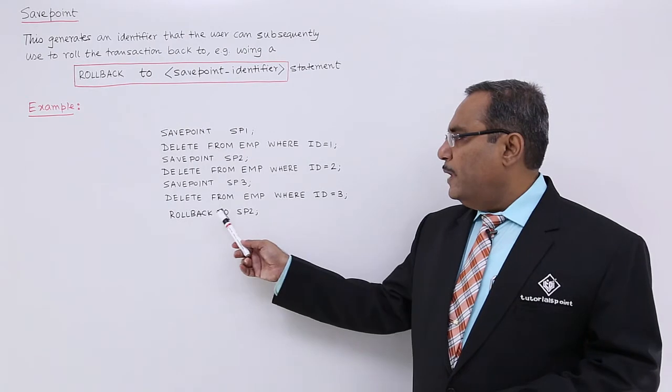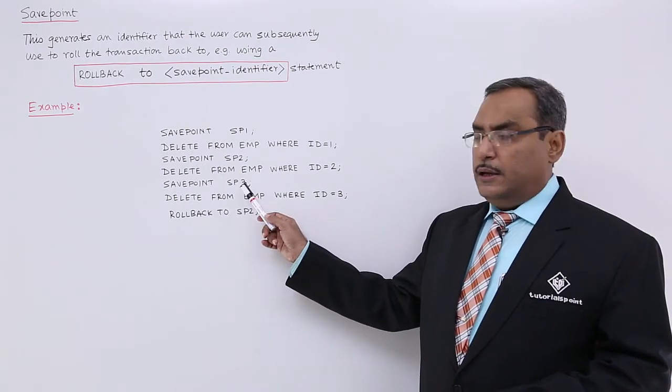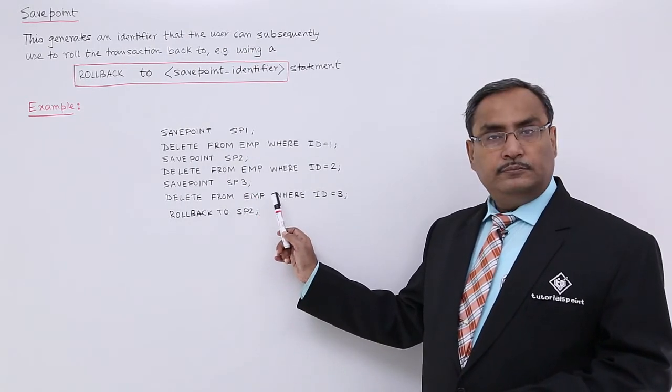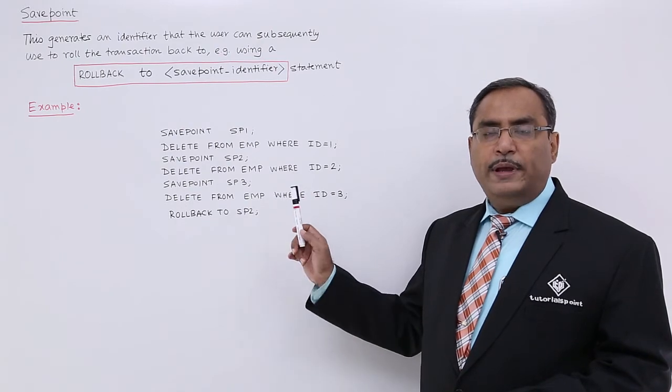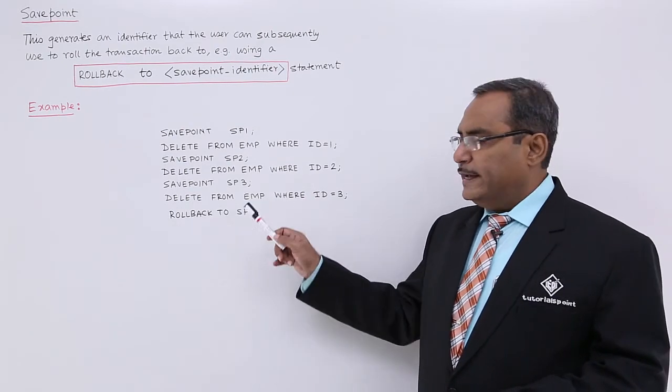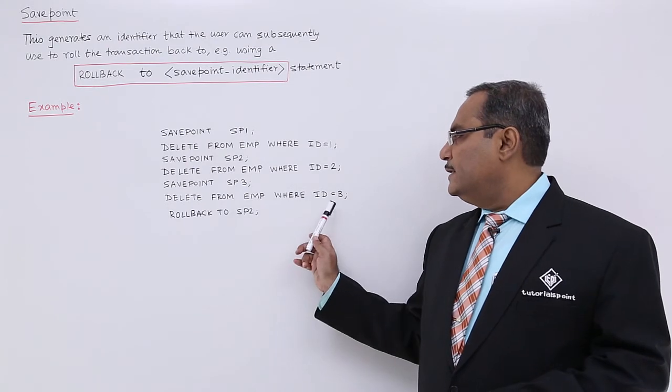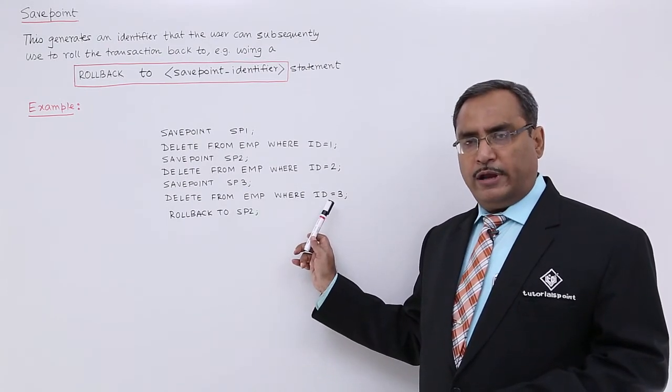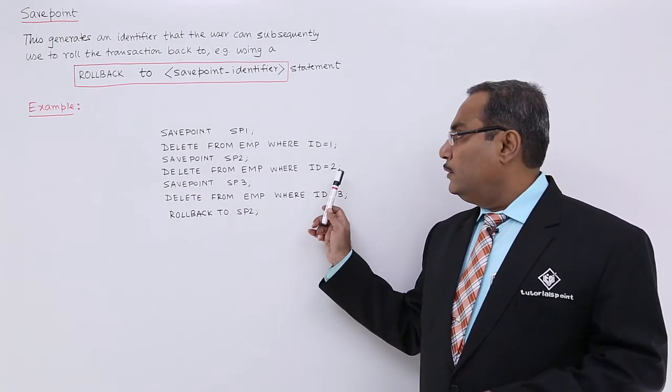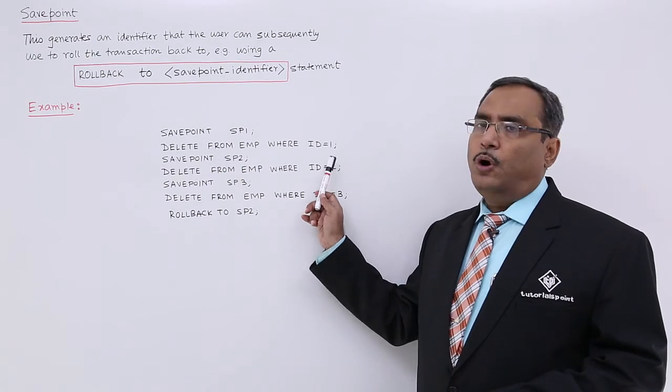So, similarly, if we do rollback to SP3, then this particular delete statement will become undo. So, now, next time if you go for select star from EMP, in that case, you will be finding tuple or record against the ID 3, but not against the ID 2 or ID 1.